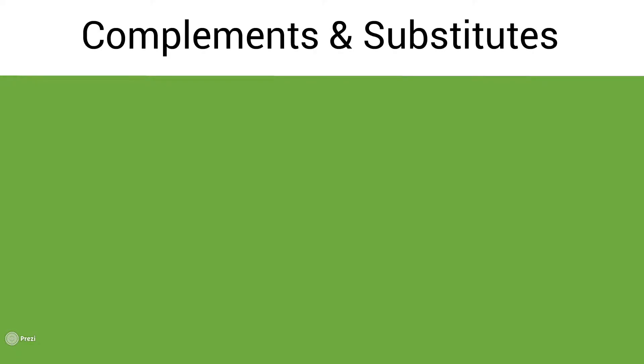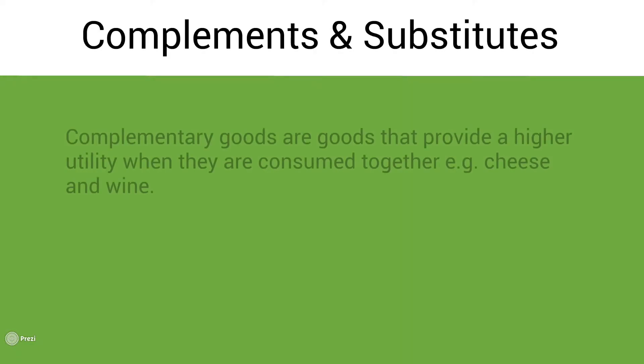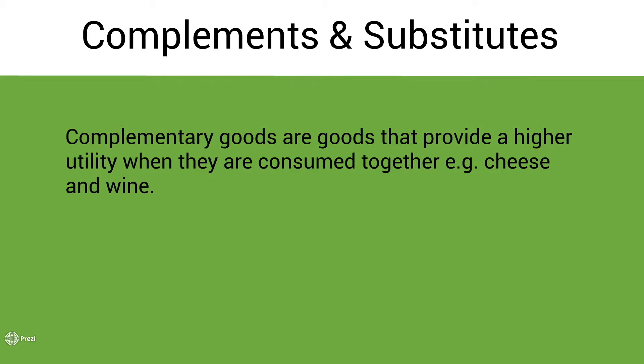Now we come on to the final two types of relationships, which are complementary goods and substitute goods. Complementary goods are goods that provide a higher level of utility when they are consumed together, for example cheese and wine. When you consume them together, the utility of individuals will be higher.